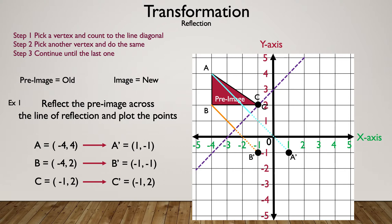Now for vertex C — C prime and C are actually the same point because C is on the diagonal line, so it doesn't move. Now we've plotted all three points, so let's connect them and plot our image.